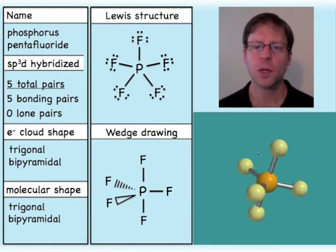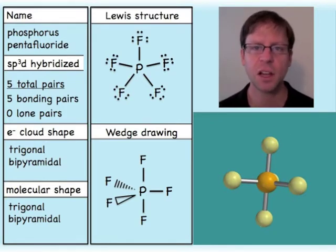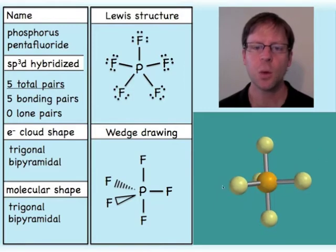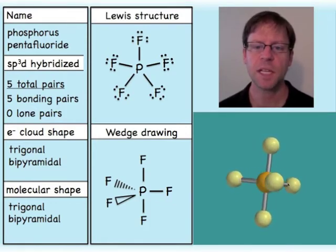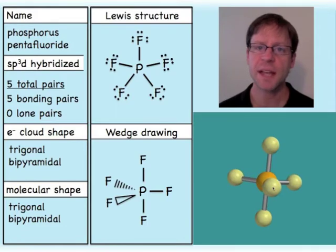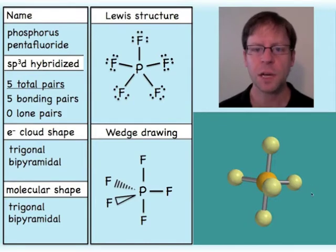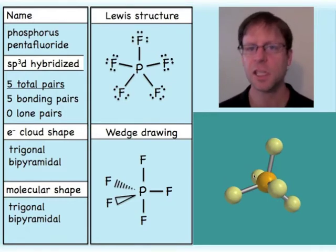Looking at this molecule, not every atom experiences the same surroundings as its neighbors — there are two different situations. You could be in what I'd call a central ring, almost like a hula hoop around a person standing tall, where all four of these atoms are in a plane. When I line up one of the fluorines with the phosphorus, you can see that the top and bottom atoms are actually co-linear.